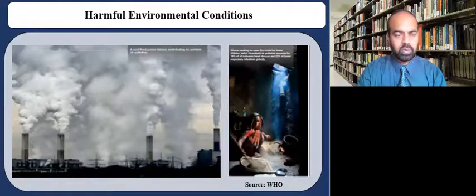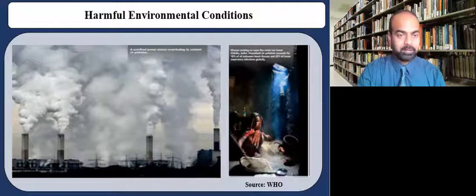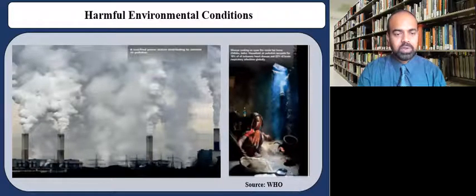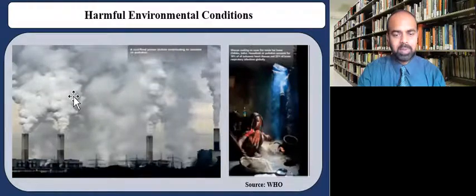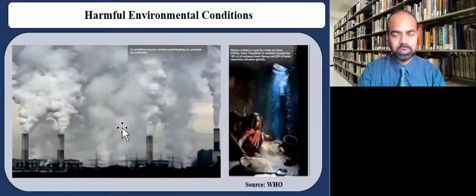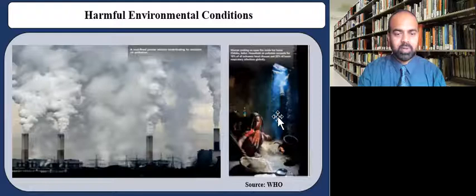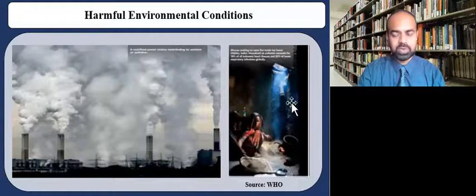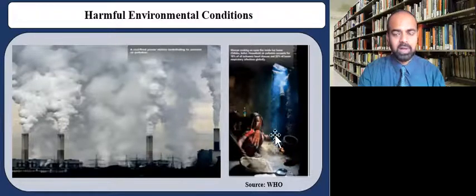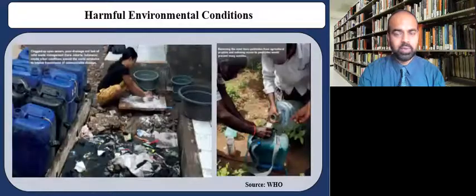Now I'm going to show you a few photos or images from different countries around the globe to provide you a glimpse of how environment is related to the well-being of people. The figure on your left shows a coal fire power station contributing to ambient air pollution, which affects millions of people around the globe, especially in China and India, where pollution levels are very bad. On your right, you can see a woman cooking using open fire stove inside her home and the pollution associated with this usage. Many countries still rely on solid fuels for cooking and heating, and women and children are exposed to these high levels of pollution.